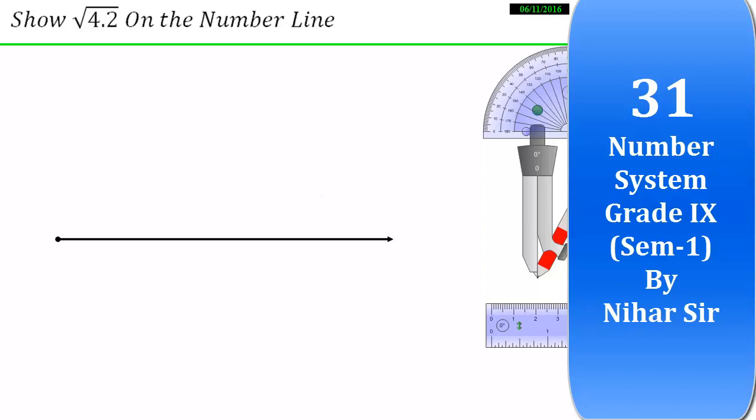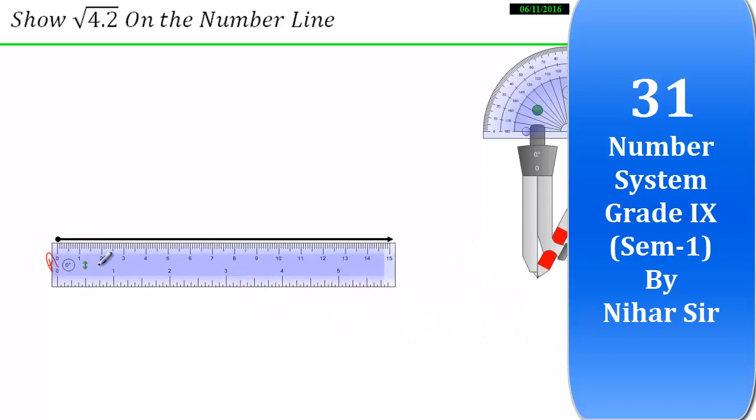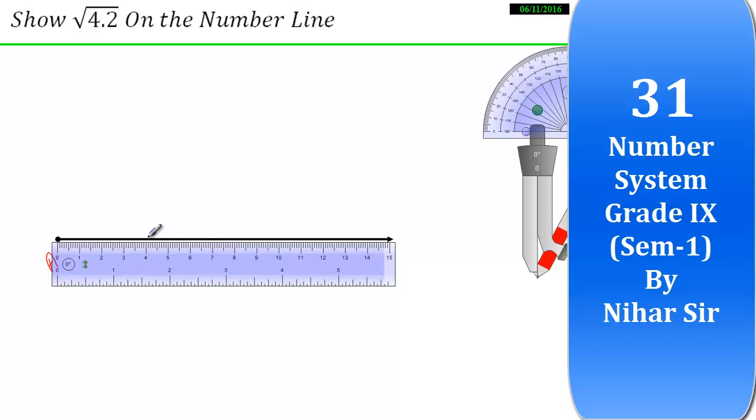So this is the ray. Here let's take A. Now I will take a point B on the number line such that it equals 4.2. So I will take it over here, exactly over here, that's 4.2. So this is my 4.2.